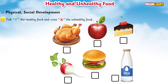Is chicken healthy or unhealthy? I hope this is healthy food — it builds your bones. So we will mark a tick with green color. Now you can see there is an apple, and apple is always a healthy food. One apple a day keeps the doctor away. So this is a healthy food and we will mark a tick with green color.